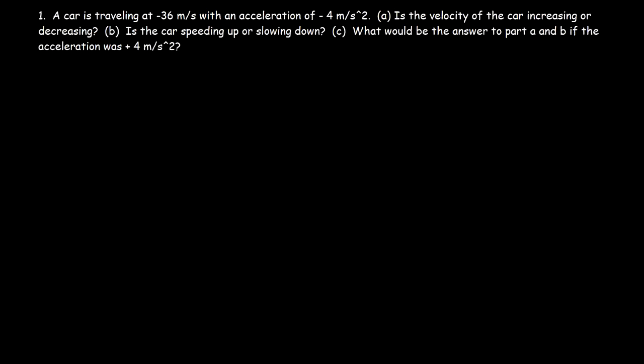In this video, we're going to talk about how to tell if an object or vehicle is speeding up or slowing down. So let's work on this problem. A car is traveling at negative 36 meters per second with an acceleration of negative 4 meters per second squared.